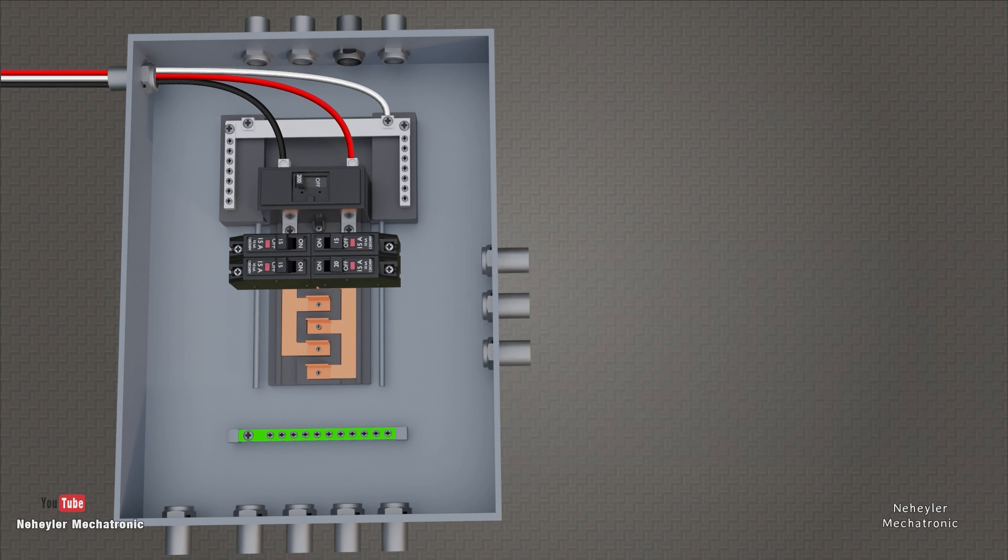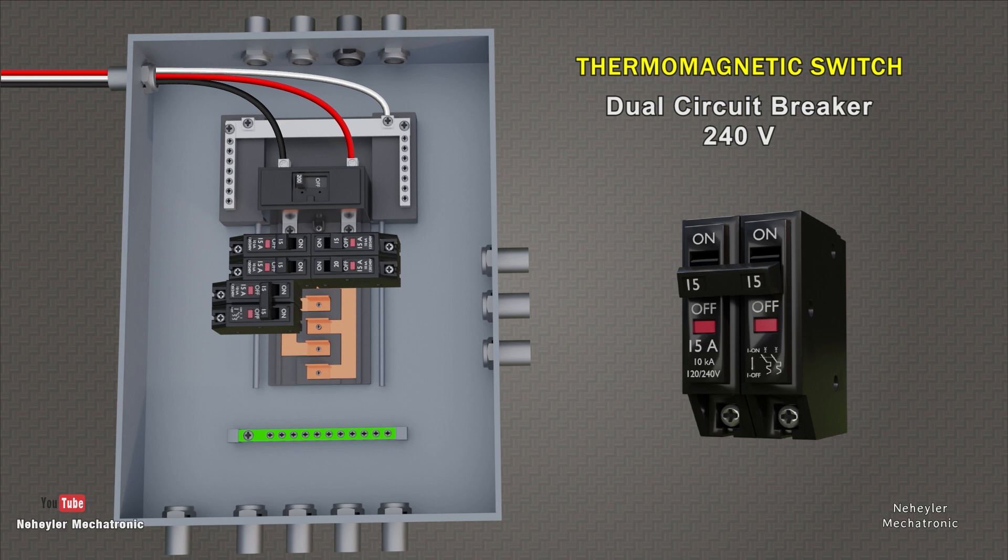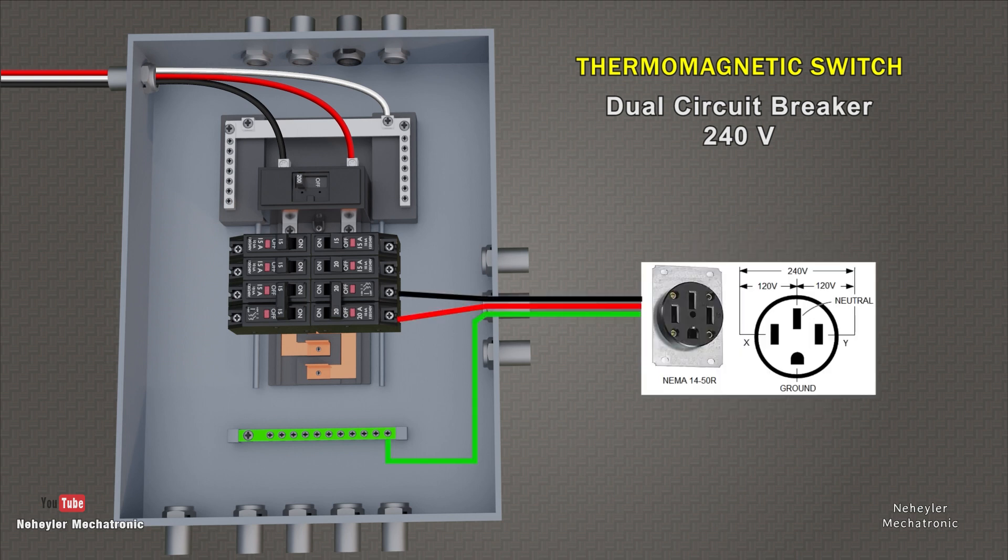It is also possible to consider bipolar or dual breakers. This element is usually used when you have machines that require a voltage of 230 or 240 volts, such as motors, air conditioning, stoves, etc. These can be 15, 20, or more amperage. The connection is made using the two hotline wires and the ground wire. In some cases, the outlets also have a terminal for connecting the neutral wire.